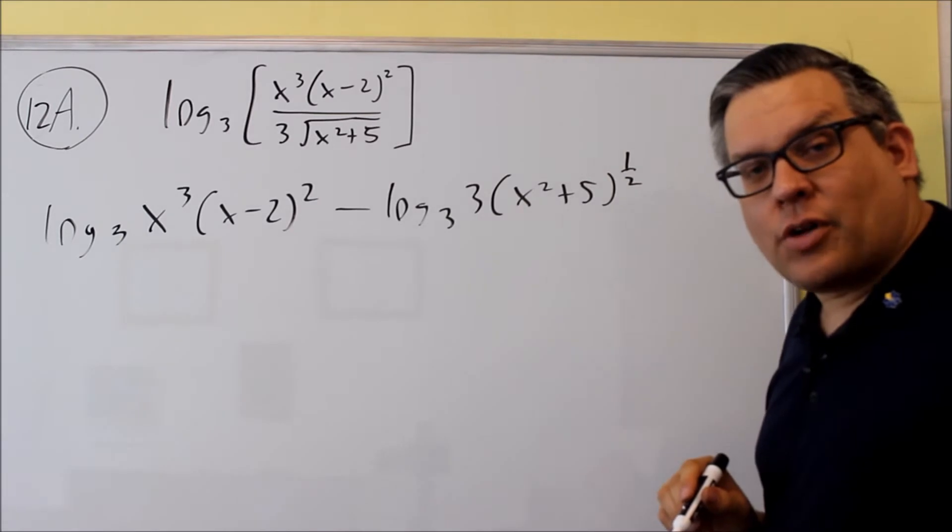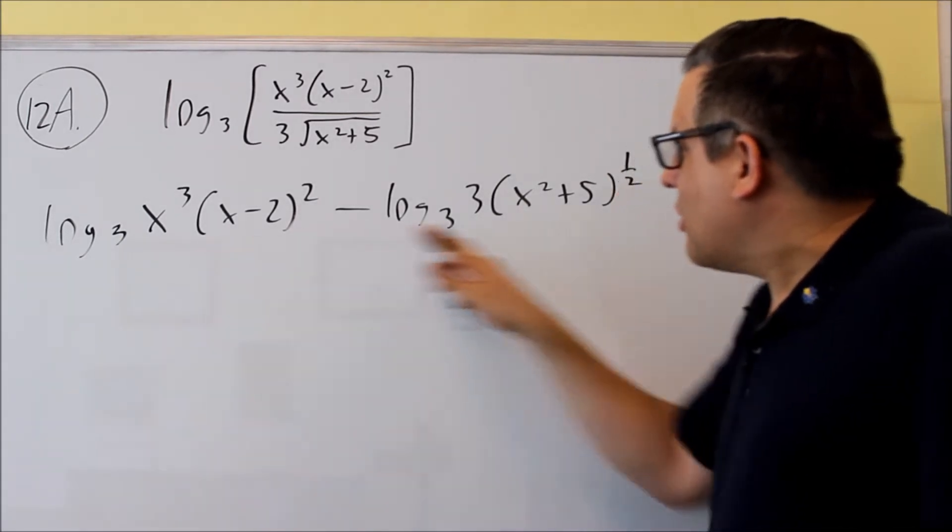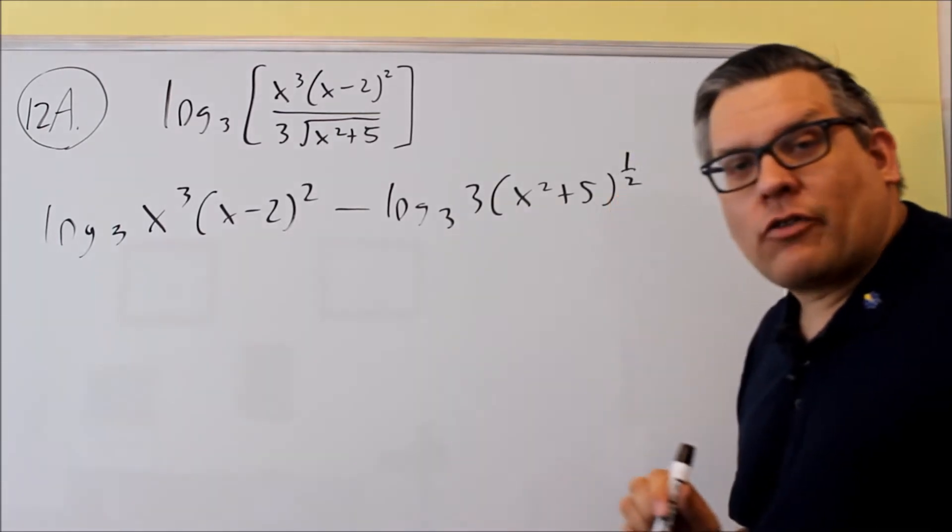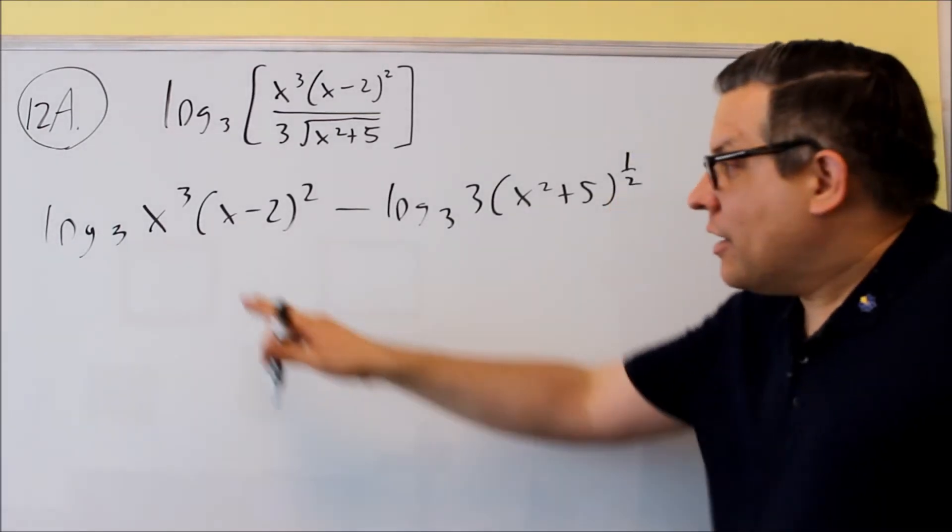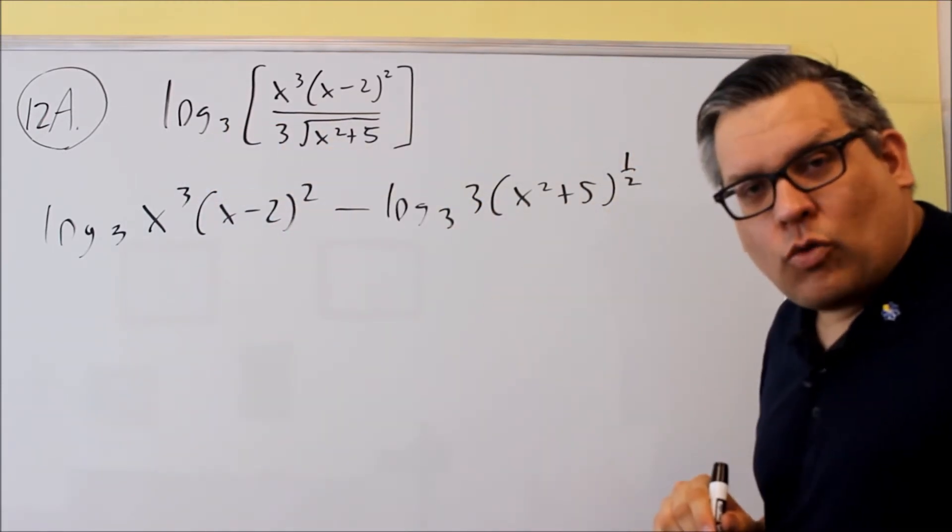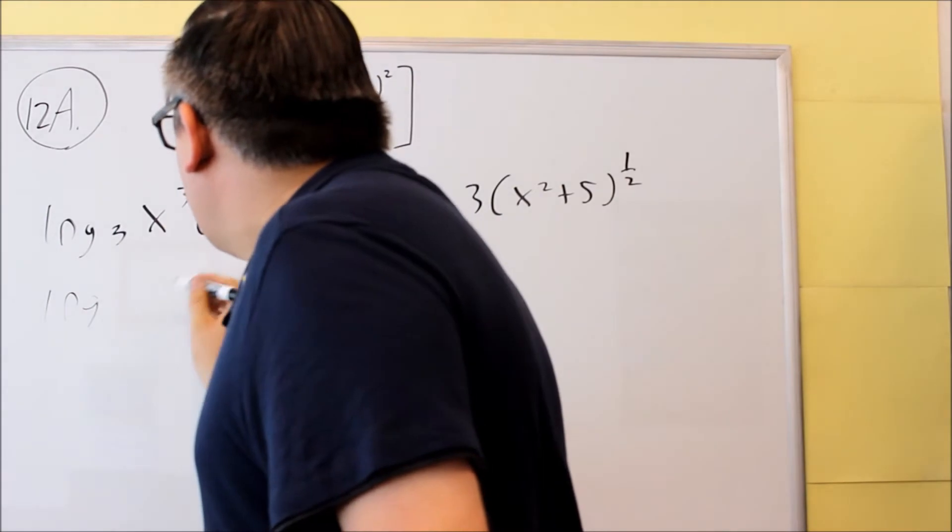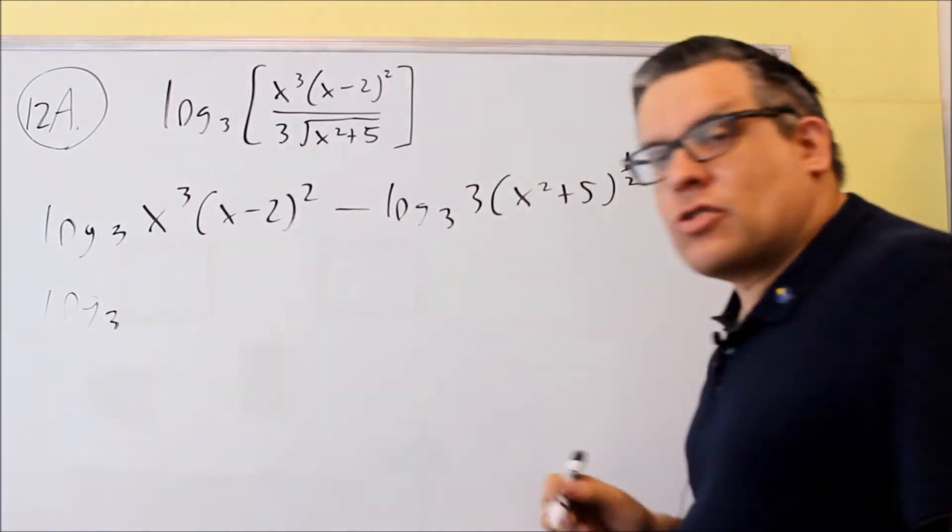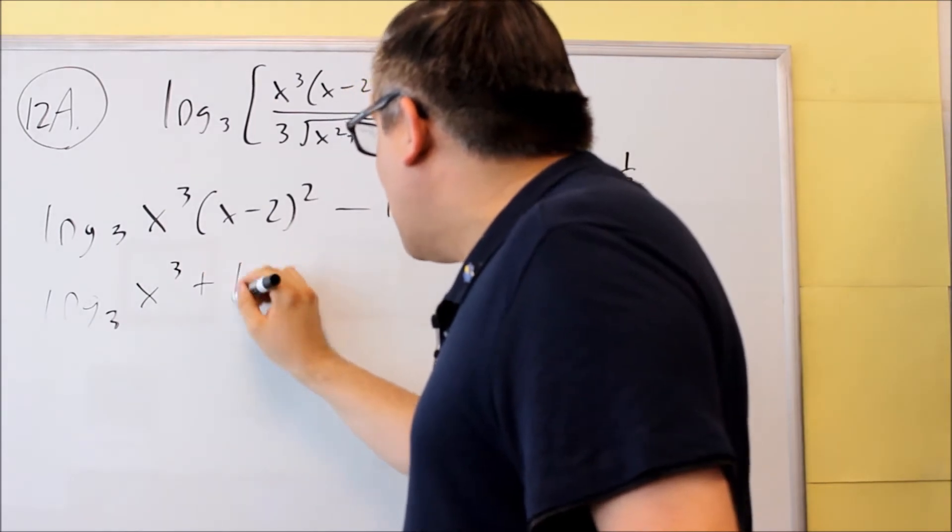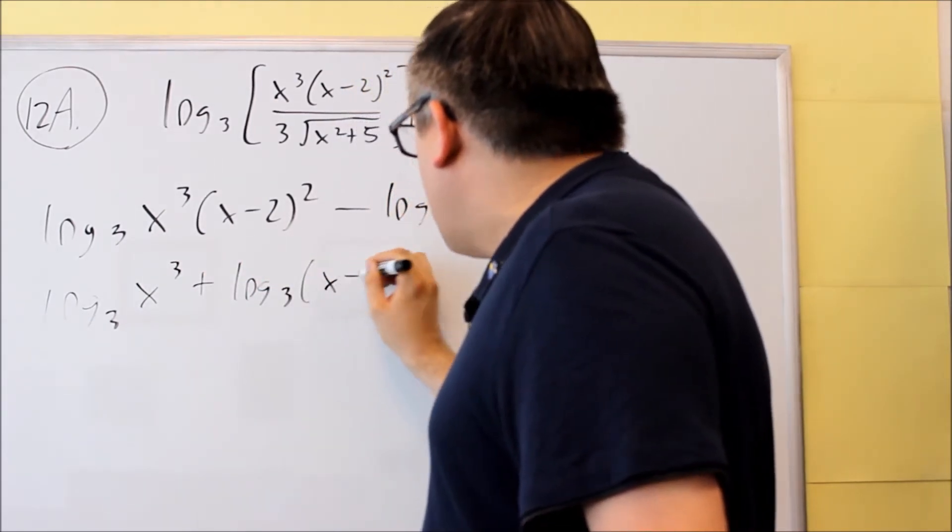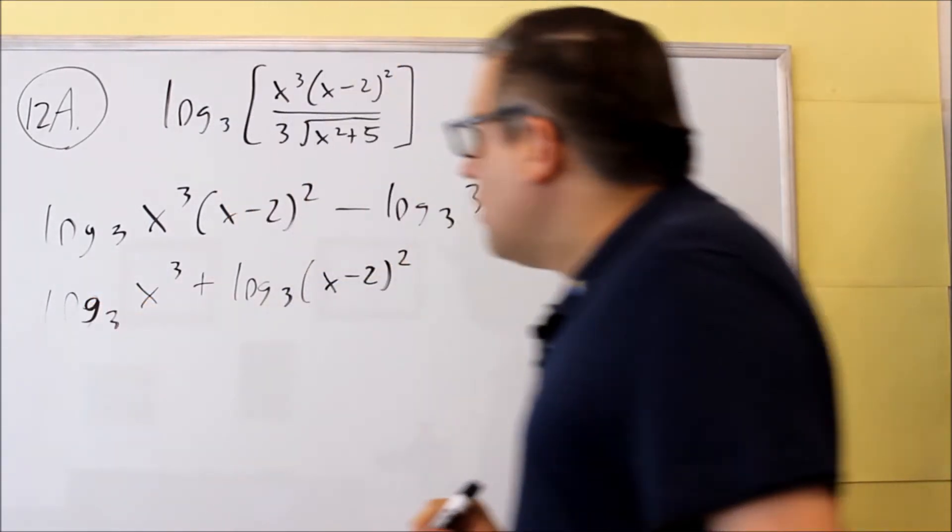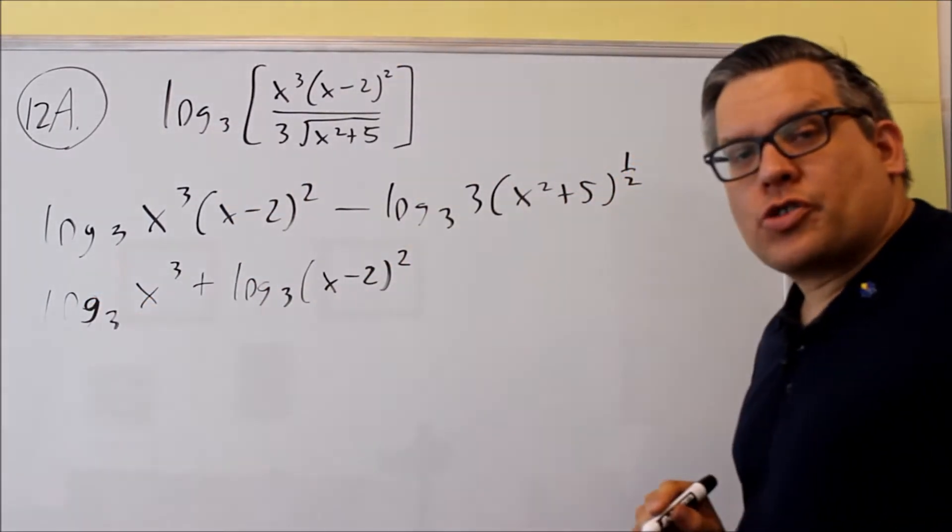Now next, each of these are products that I can use to expand it further. Anytime I have a multiplication happening like I do here, that's going to turn into a plus when I use the log rules to expand it. Okay, I have x cubed, and I have plus log 3, x minus 2 squared. So I'm going to do a plus here because the original was multiplication.